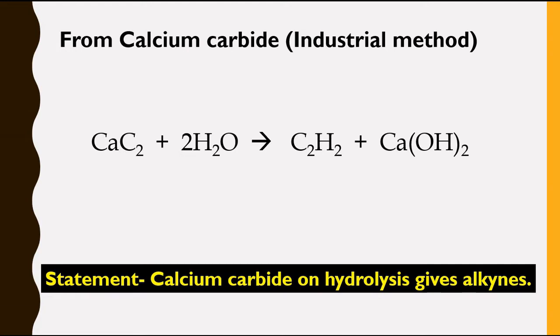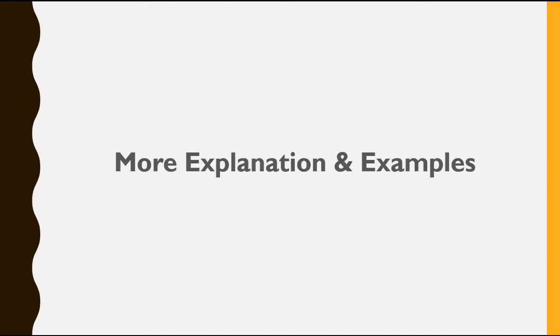So, how is this reaction? This is a simple trick. In more explanation with example, calcium carbide, that is CaC2. This structure is calcium and that C2 is arranged like this.